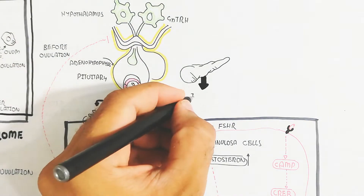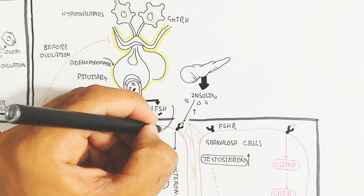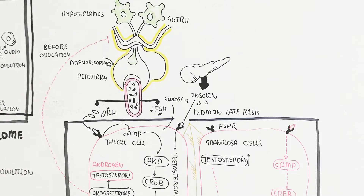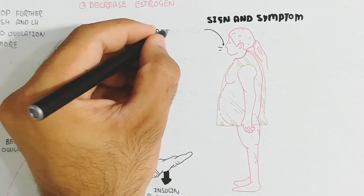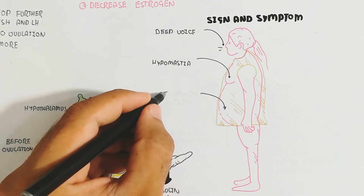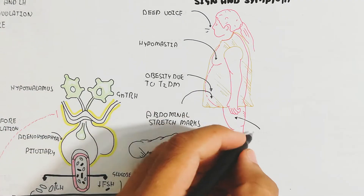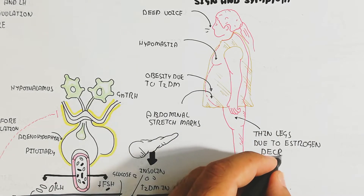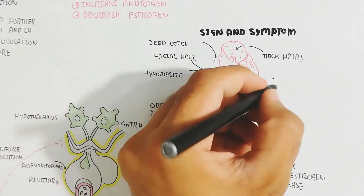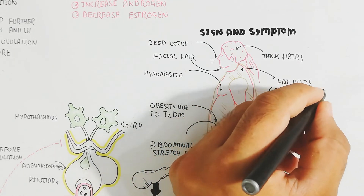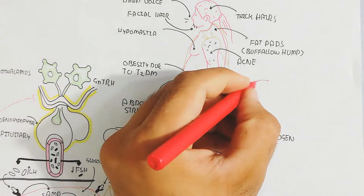Additionally, the pancreas releases insulin, which has higher sensitivity to the thecal cell and binds with it to produce more testosterone because insulin is anabolic. Glucose moves inside to further stimulate the thecal cell, leading to a late risk factor of type 2 diabetes mellitus. Signs and symptoms include deep voice, hypomastia (decrease of breast tissue), obesity due to later-developing type 2 diabetes, abdominal stretch marks, thin legs due to estrogen decrease, thick hair or even baldness, and buffalo hump fat pads in the back region. Acne is also produced due to higher androgen levels.